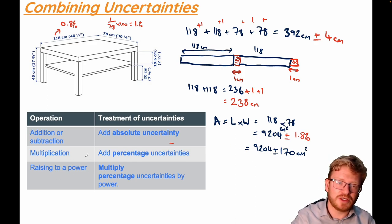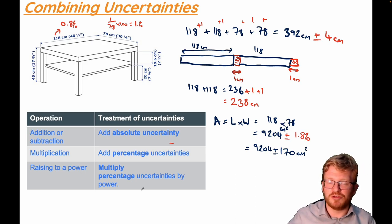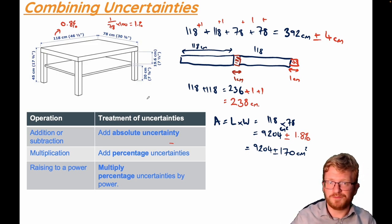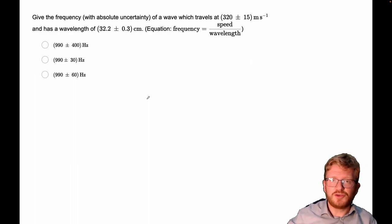Finally, if you raise something to a power, then you just multiply the percentage uncertainty by that power again. So, if I had something that I'm squaring, I double my percentage uncertainty. That doesn't come up so much at AS level. It tends to come up more at A2. Let's do a practice of that then.